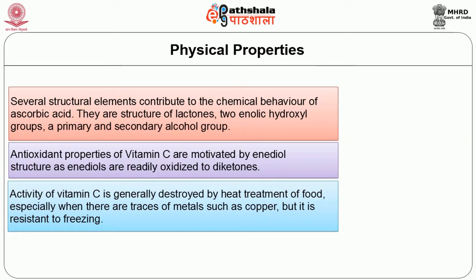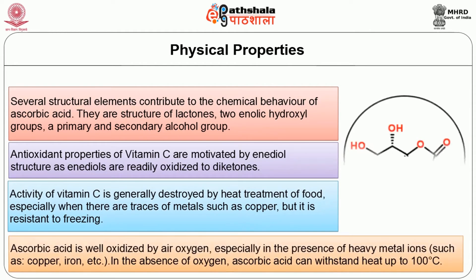The activity of vitamin C is generally destroyed by heat treatment of food, especially when there are traces of metals such as copper, but it is resistant to freezing. Vitamin C is probably one of the most unstable water-soluble vitamins in nature. In nature there are only the L-form of ascorbic acid and dehydroascorbic acid. Ascorbic acid is readily oxidized by air oxygen, especially in the presence of heavy metal ions such as copper and iron. In the absence of oxygen, ascorbic acid can withstand heat up to 100°C.